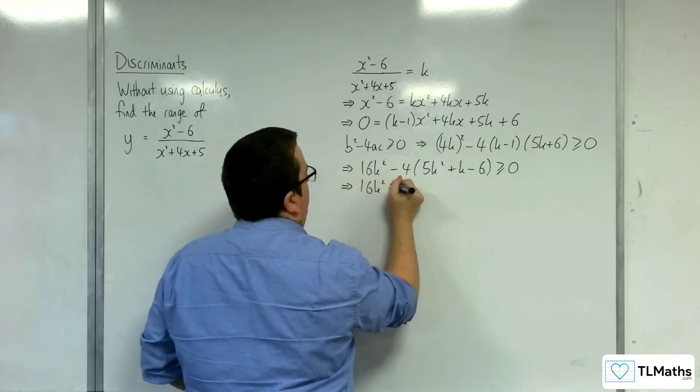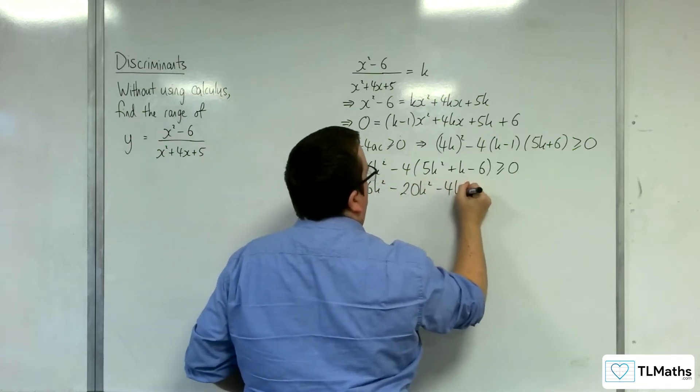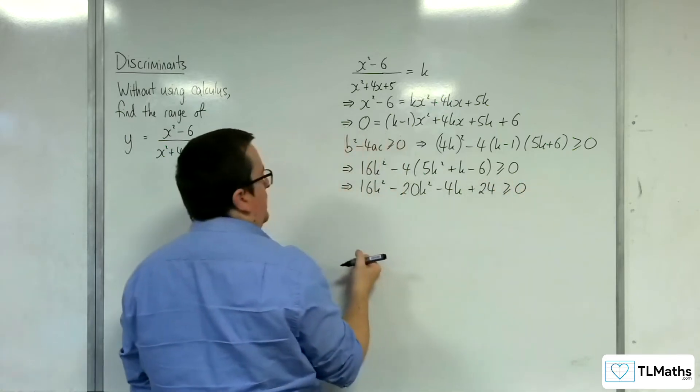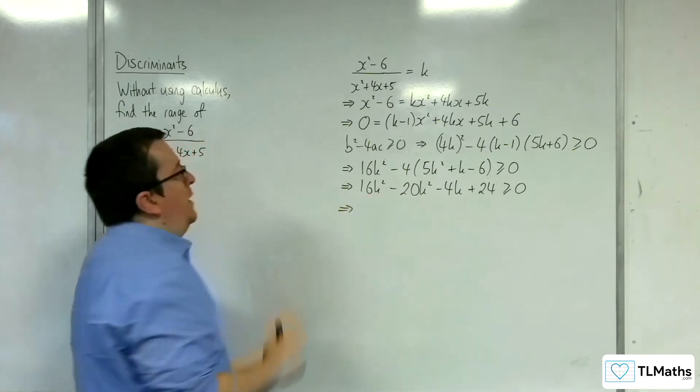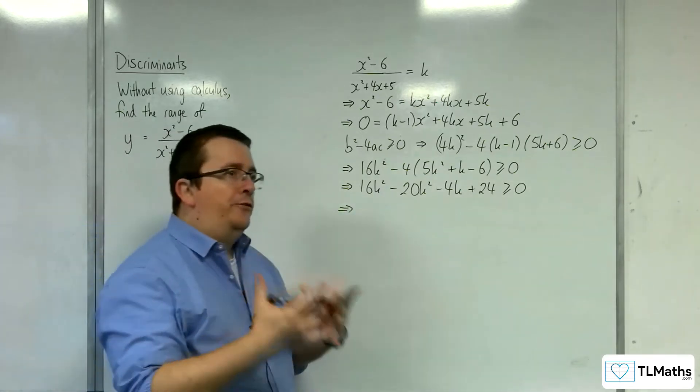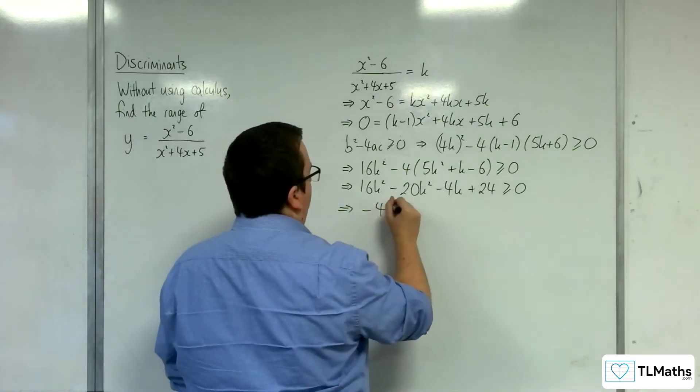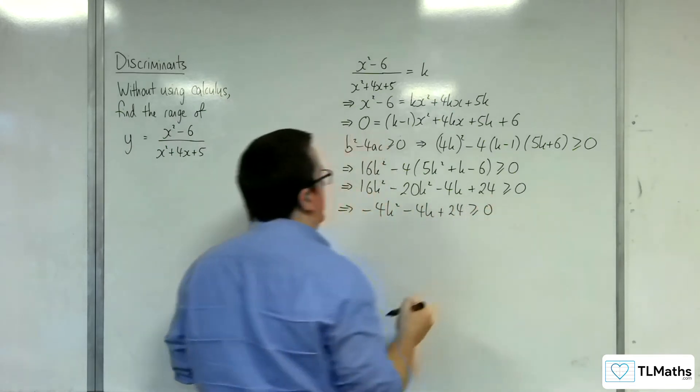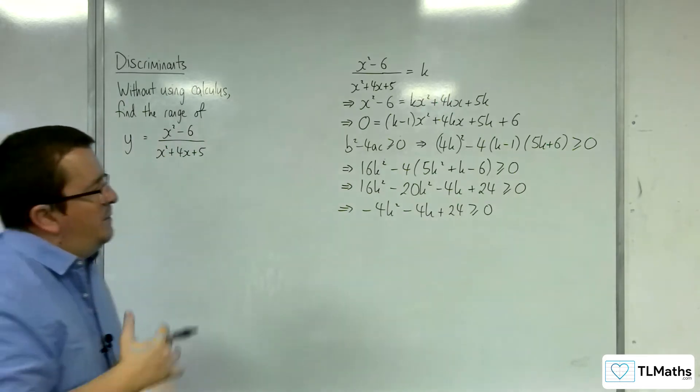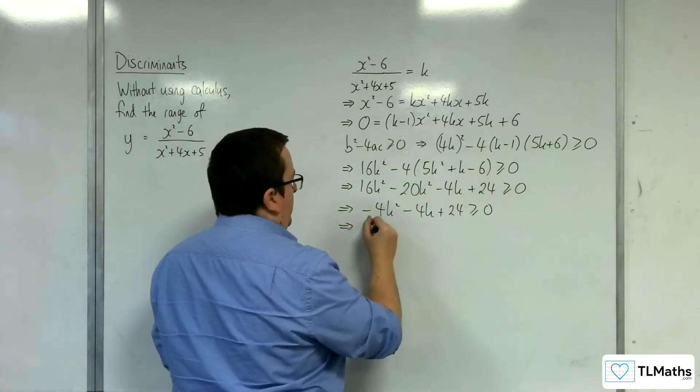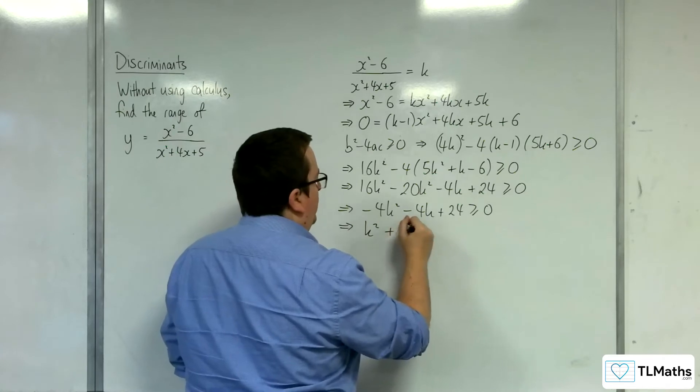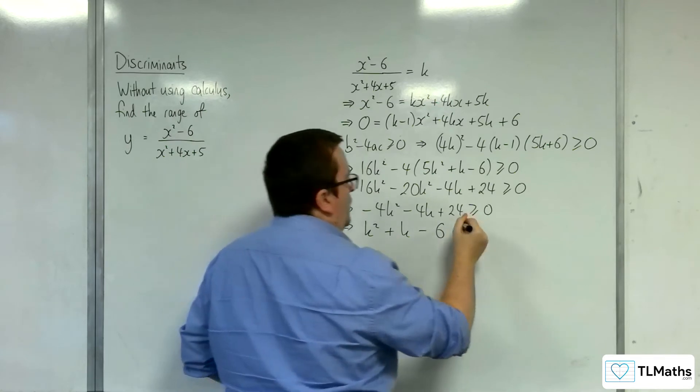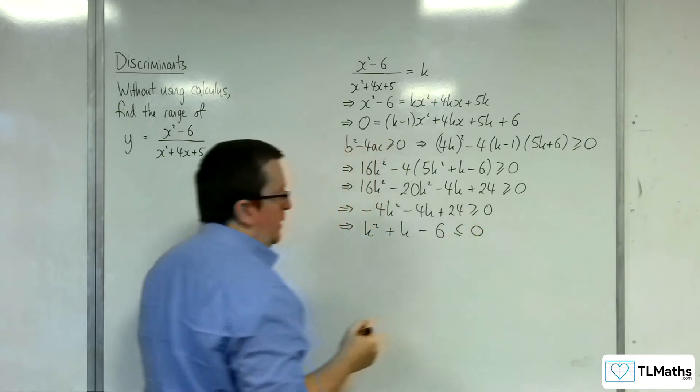So 16k squared take away 20k squared is minus 4k squared, and we've got the minus 4k plus 24 is greater than or equal to 0. Now I'm going to divide through by minus 4, so we get k squared plus k minus 6, and that's going to flip the direction of the inequality symbol, so it's less than or equal to 0.